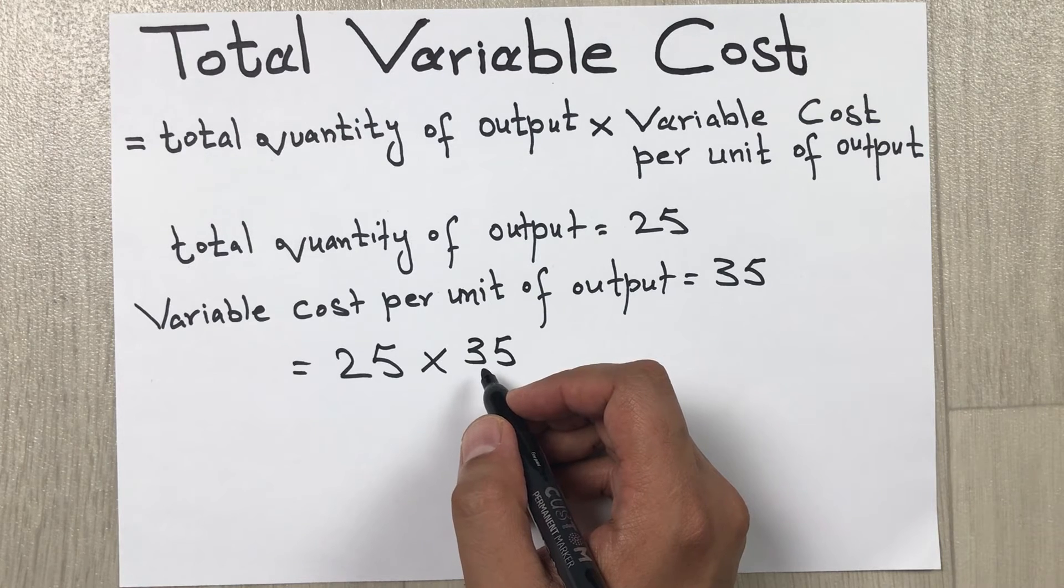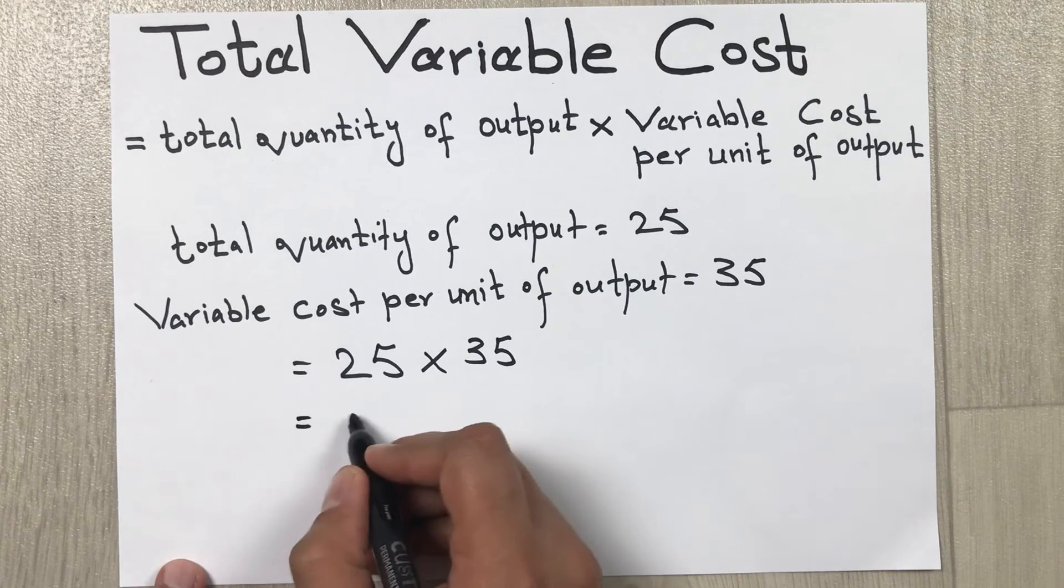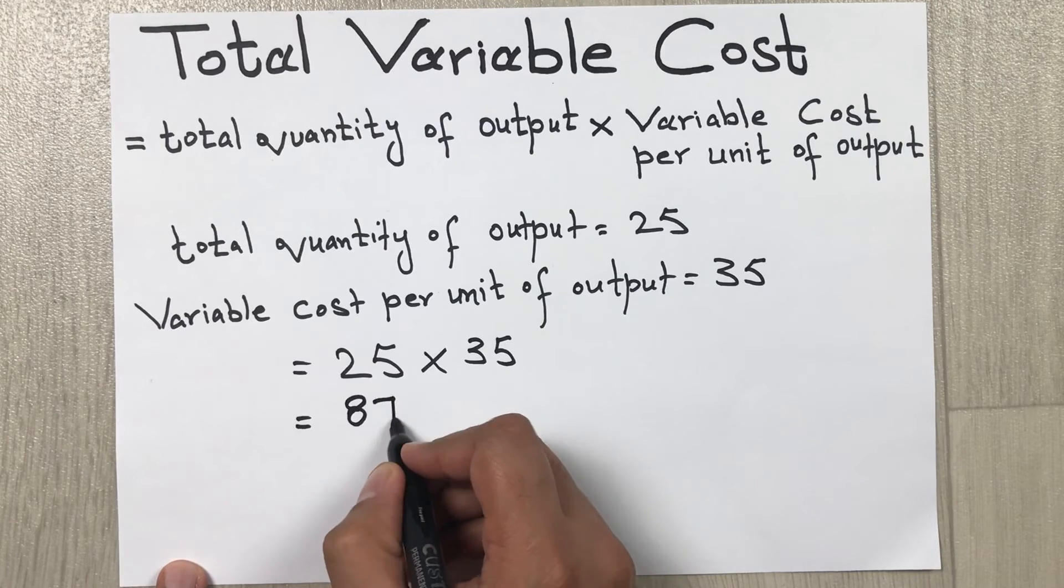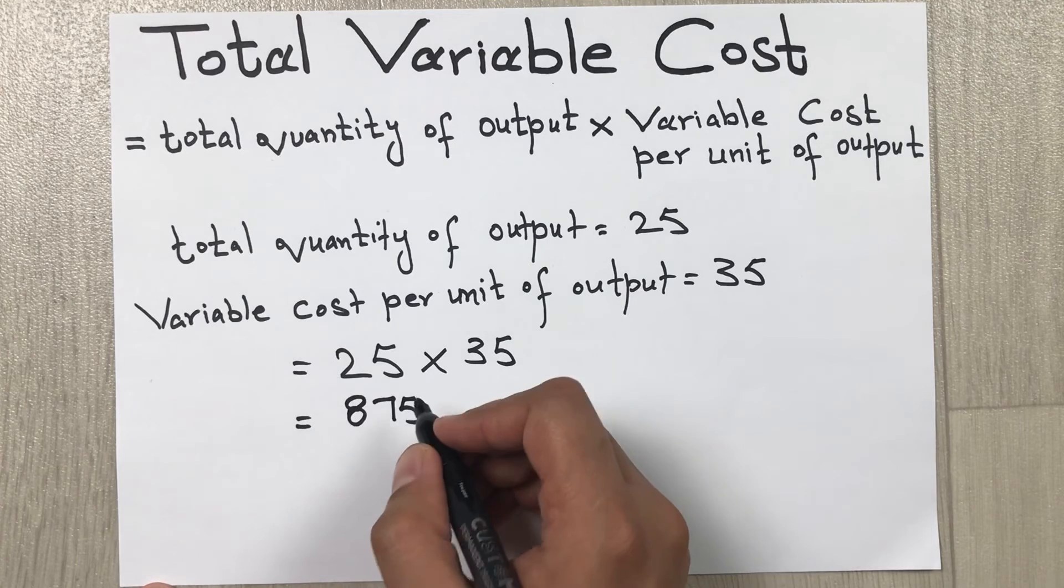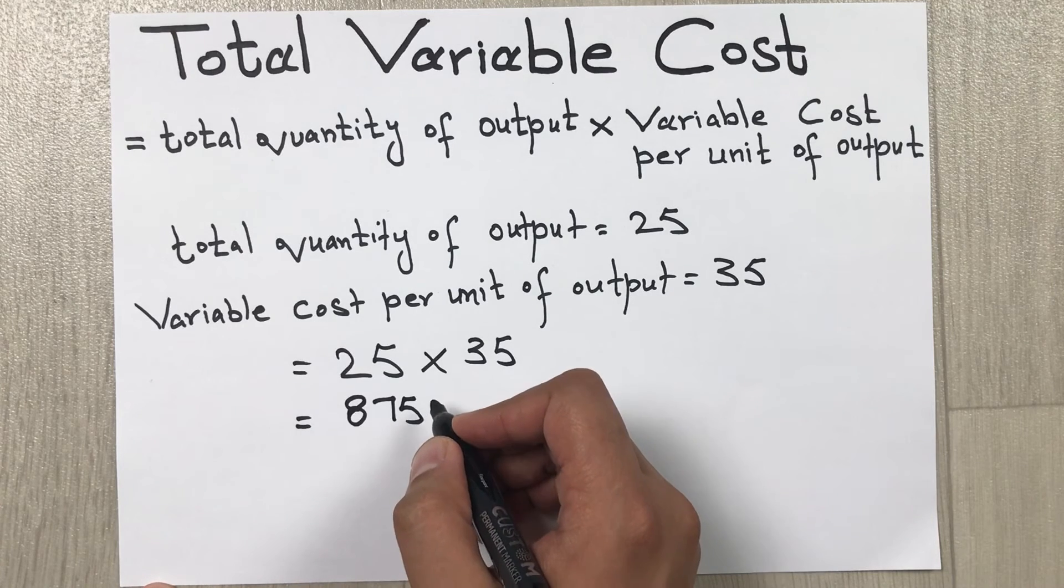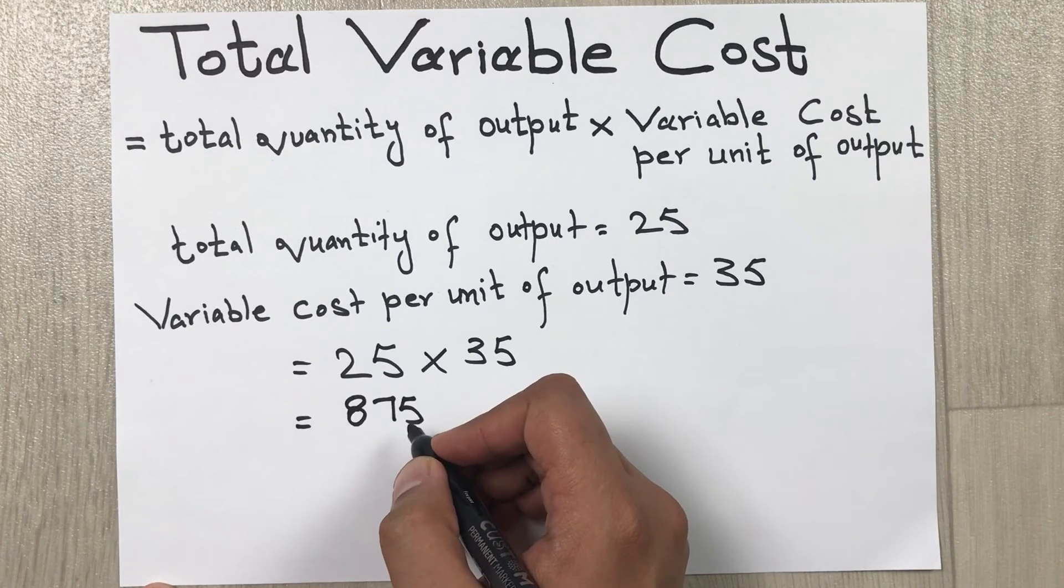When we do this calculation, we get our answer, which is 875. This is our total variable cost.